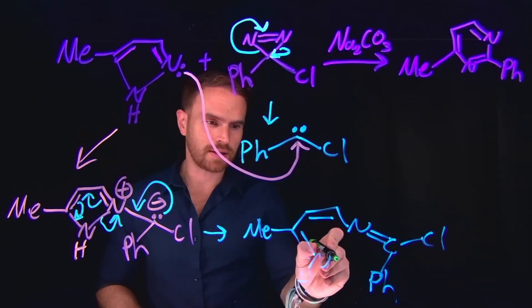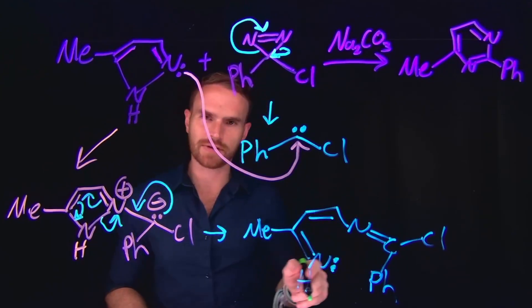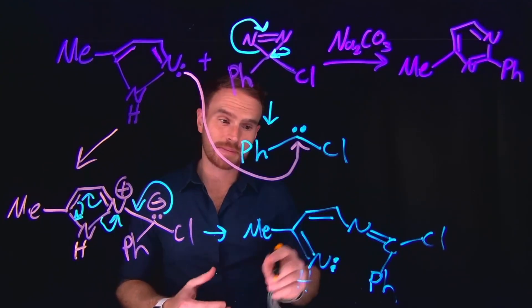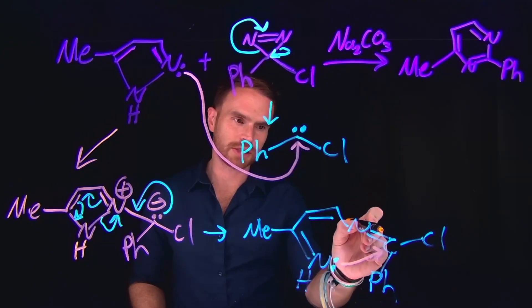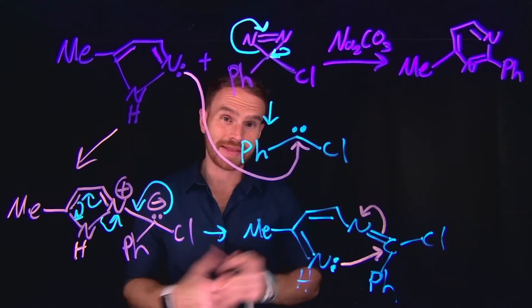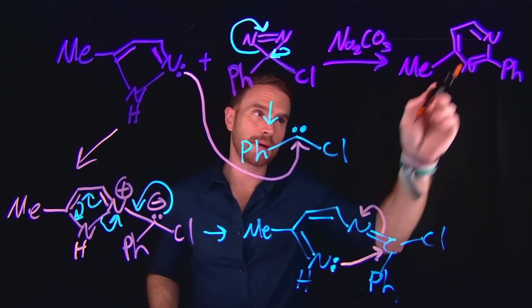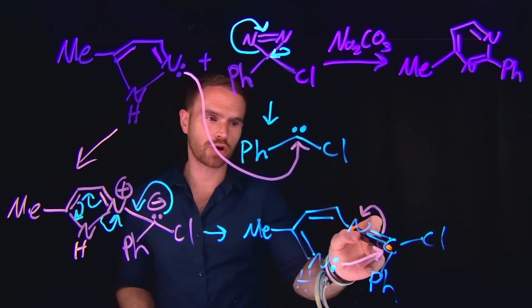Now importantly, imines are electrophilic at the carbon position due to the electronegativity difference between carbon and nitrogen. This means that this lone pair of electrons can actually attack at that carbon position, moving these pi electrons up to the nitrogen species. And this is how we reform the sixth member ring, where now there's a nitrogen to carbon to nitrogen, just like we've drawn in our arrows here.